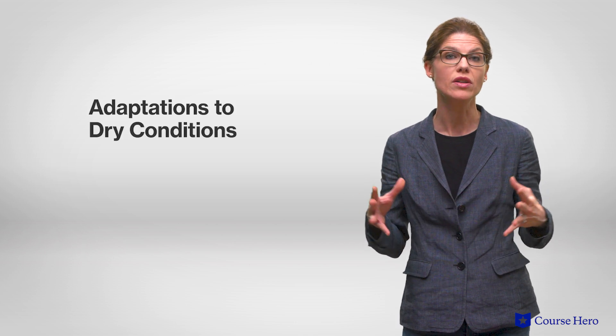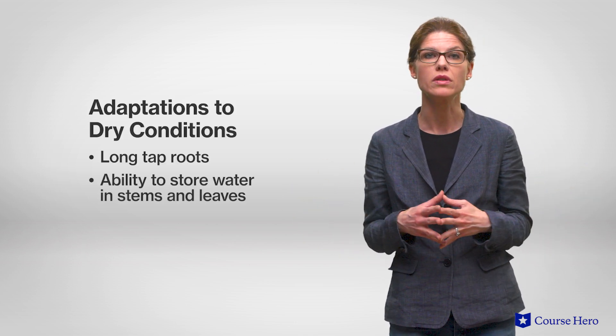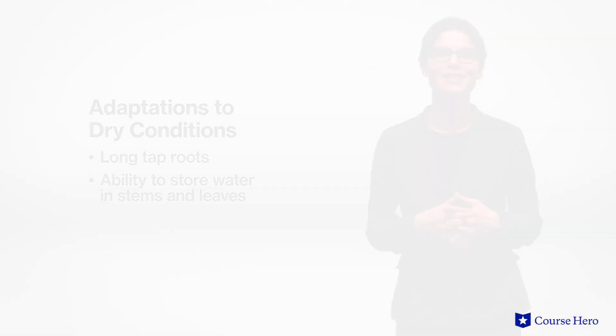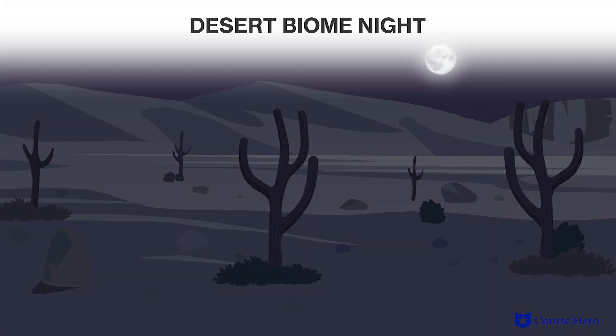Even in one desert, large temperature fluctuations can occur throughout the day. Plants found in deserts tend to be small and spread out with adaptations to dry conditions, such as long tap roots or the ability to store water, as seen in cacti. Desert animals are also adapted to low water consumption, and many animals are nocturnal to avoid intense heat and sun exposure, such as badgers and scorpions.